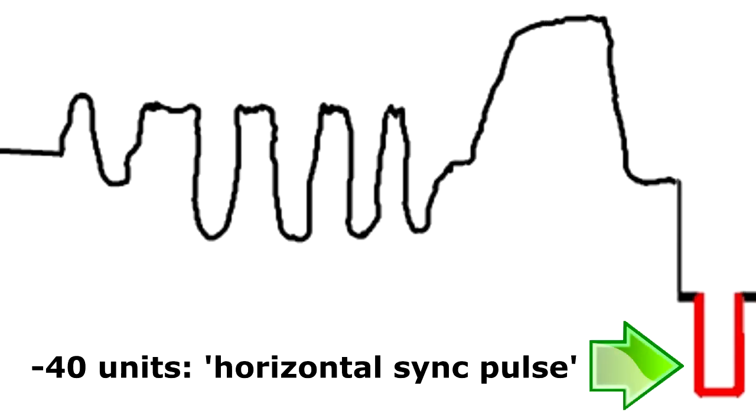To ensure that our picture monitor scanning doesn't drift off frequency over a long time, which would skew our picture in unpredictable ways, we send, in the middle of the horizontal blanking period, a horizontal sync pulse. This gives the monitor a reminder to re-synchronize with the camera scanning at the end of every line. This sync pulse is at a level where it can be easily detected by the monitor, and will never be seen by the viewer, at minus 40 units on our video scale. The pulses will be sent 15,750 times a second, one for each line of video.